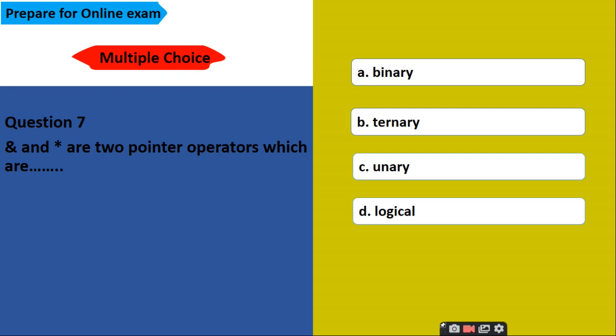Ampersand and star or asterisk are two pointer operators which are binary, option B, ternary, option C, unary, or option D, logical. Okay, and these two are the unary operators.